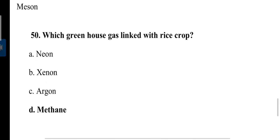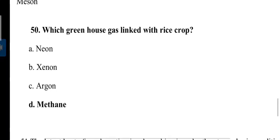Which greenhouse gas is linked with rice crop? Everyone knows that is methane. Methane is released from rice crop because of activity of microorganisms on organic matter. It is a result of anaerobic respiration.